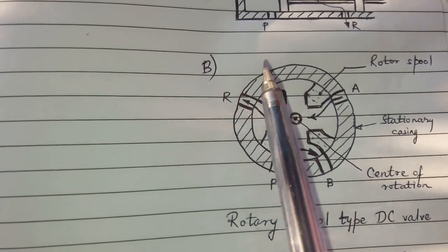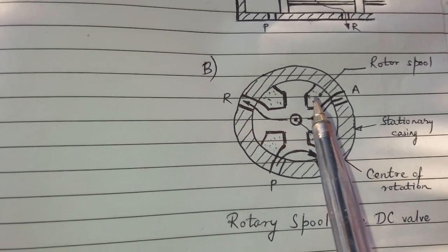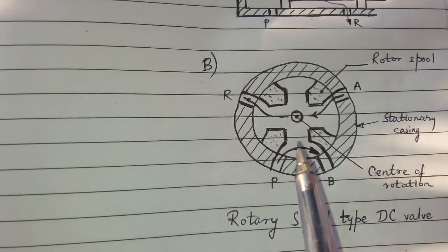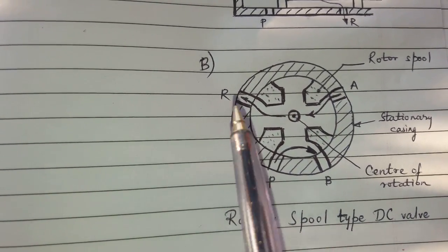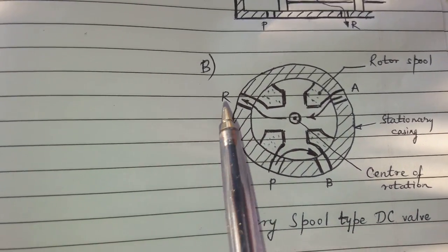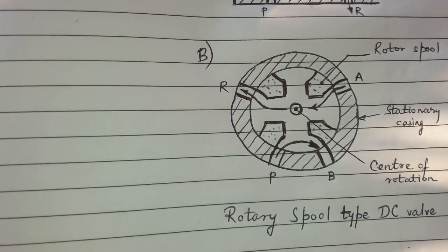The outside this is stationary casing and this is rotating spool which aligns with the ports. A, B, P, R are the ports in the casing.